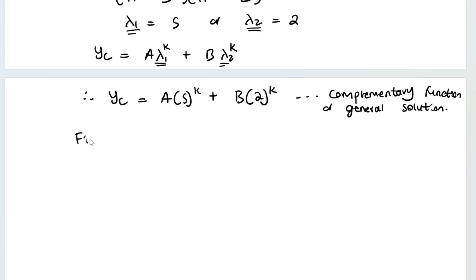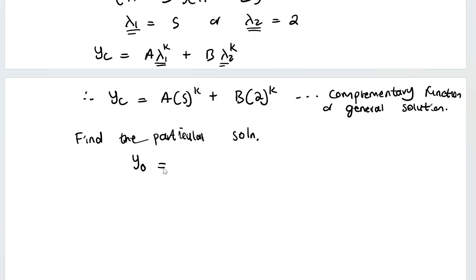Now let's find the particular solution. Different initial conditions will give different particular solutions. In this case we are given that y sub 0 equals 0 and y sub 1 equals 3. These initial conditions will help us solve for the constants.